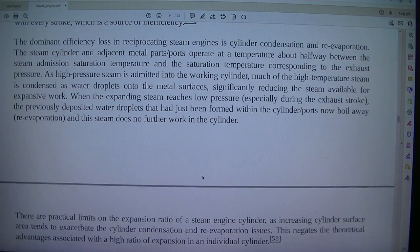The dominant efficiency loss in reciprocating steam engines is cylinder condensation and re-evaporation. The steam cylinder and adjacent metal parts and ports operate at a temperature about halfway between their steam admission saturation temperature and the saturation temperature corresponding to the exhaust pressure. As high pressure steam is admitted into the working cylinder, much of the high temperature steam is condensed as water droplets onto the metal surfaces, significantly reducing the steam available for expansive work. When the expanding steam reaches low pressure, especially during the exhaust stroke, the previously deposited water droplets that had just been formed within the cylinder and ports now boil away, re-evaporation, and this steam does no further work in the cylinder.